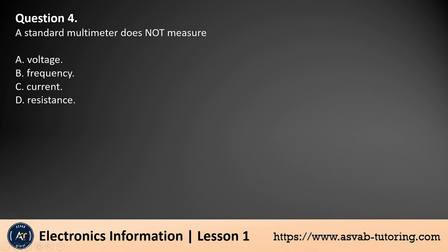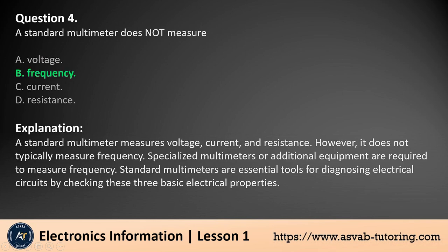Question 4. A standard multimeter does not measure: a. Voltage, b. Frequency, c. Current, d. Resistance. The answer is b. A standard multimeter measures voltage, current, and resistance. However, it does not typically measure frequency. Specialized multimeters or additional equipment are required to measure frequency. Standard multimeters are essential tools for diagnosing electrical circuits by checking these three basic electrical properties.